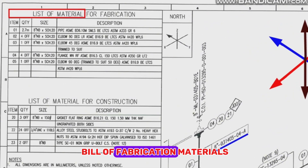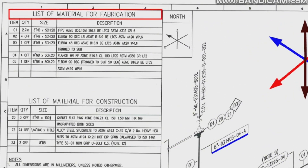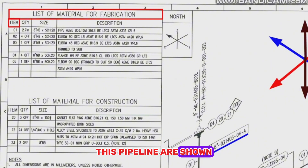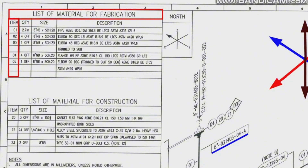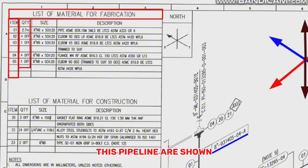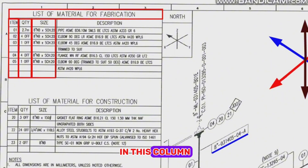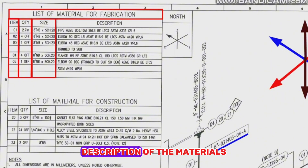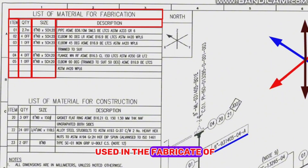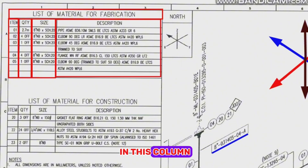This table is for bill of fabrication materials. The numbers, quantities, sizes, and descriptions of the materials used in the fabrication of this pipeline are each shown in their respective columns.